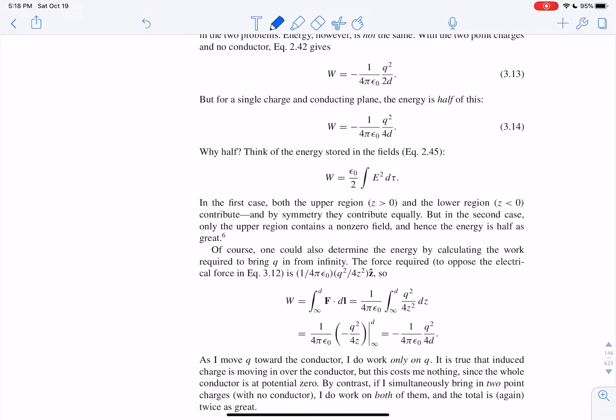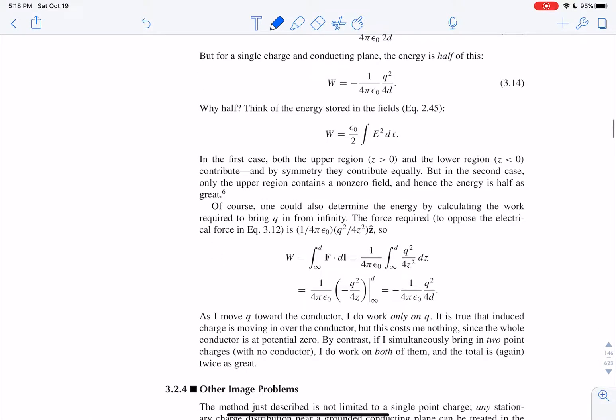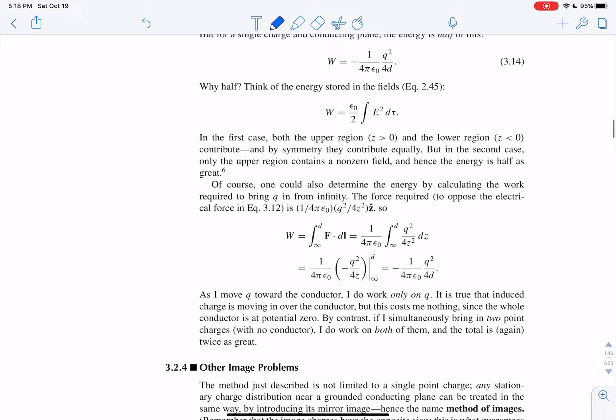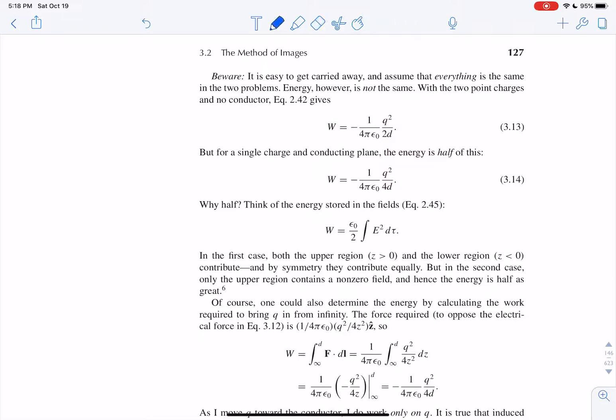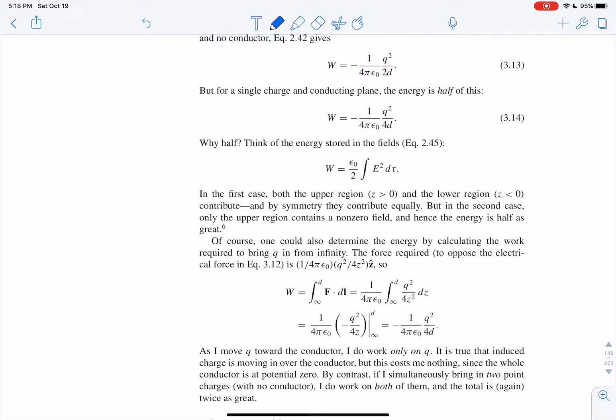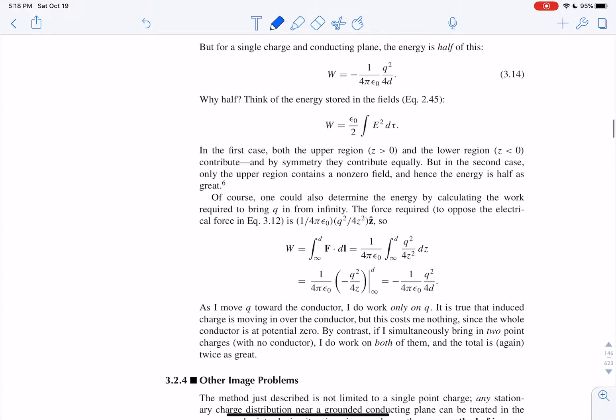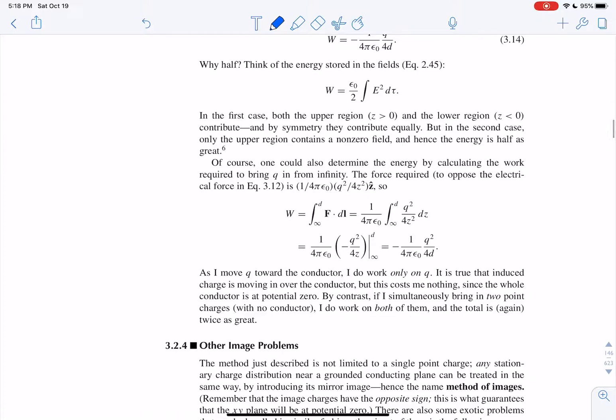Because the energy stored in the field is epsilon naught over 2 times the integral of e squared d tau. In the first case, z greater than 0, and in the lower case, z less than 0. They both contribute in, when you have plus q and minus q. But when you have the plane and the charge, you just go from the plane up to the charge. So you have half the energy contribution. So that's just an interesting thing.